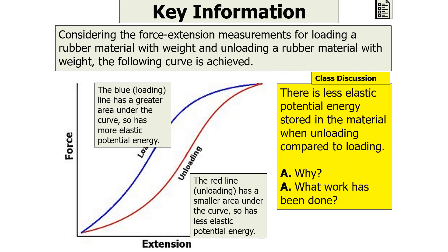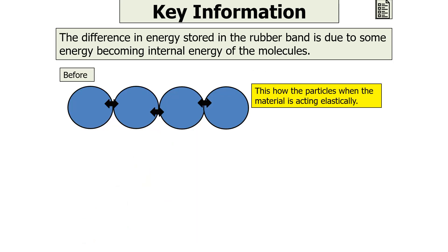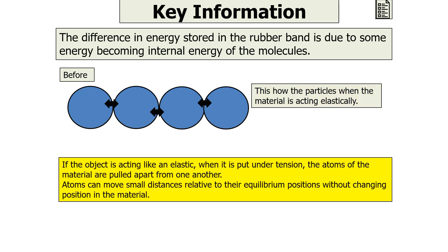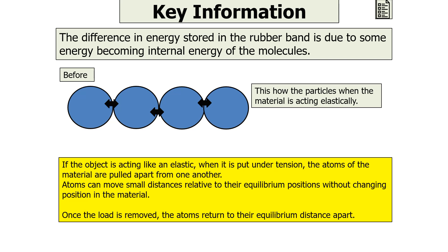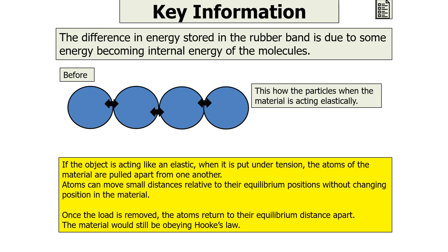There is less elastic potential energy stored in the material when unloading compared to loading. The difference in energy stored in the rubber band is due to some energy becoming internal energy of the molecules. Consider how particles behave when a material acts elastically: when put under tension, the atoms are pulled apart from one another. The atoms can move small distances relative to their equilibrium positions without changing position in the material. Once the load is removed, the atoms return to the same equilibrium distance apart, and the material still obeys Hooke's Law.